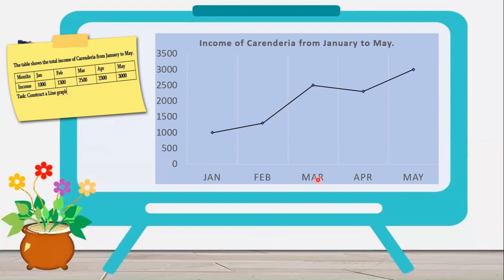For the month of March, it rises up to $2,500. And for the month of April, it lowers down to $2,300. And for the month of May, it rises up to $3,000. As we look at the trend of this income, it is rising.